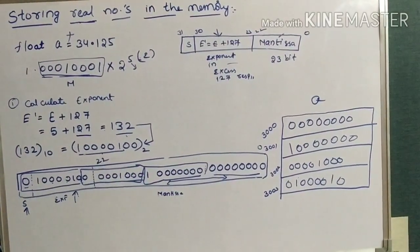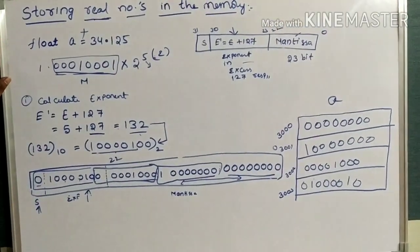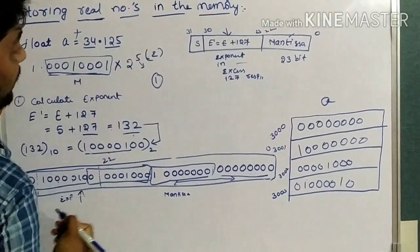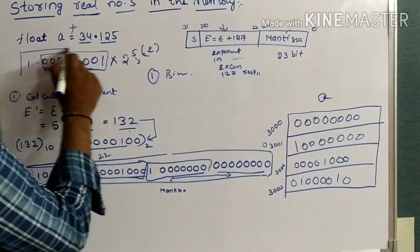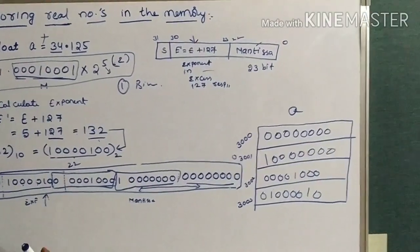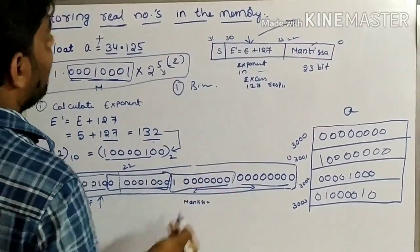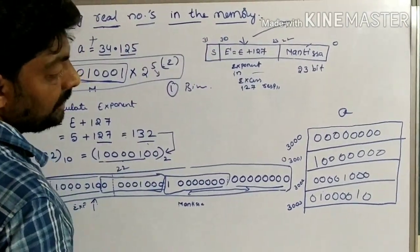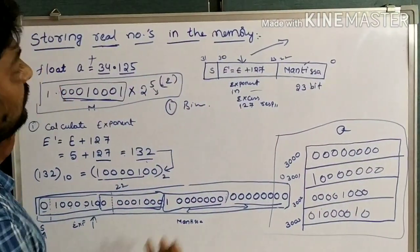This is the way real numbers — how to store real numbers in main memory. What we did here: first, we converted 34.125 into binary form. Next, we normalized that binary form. After that, we calculated the exponent part. After that, we substituted the exponent part and mantissa in the single precision table. Then we came to know how to store real numbers in memory. This is the way memory is allocated for floating point or real numbers.